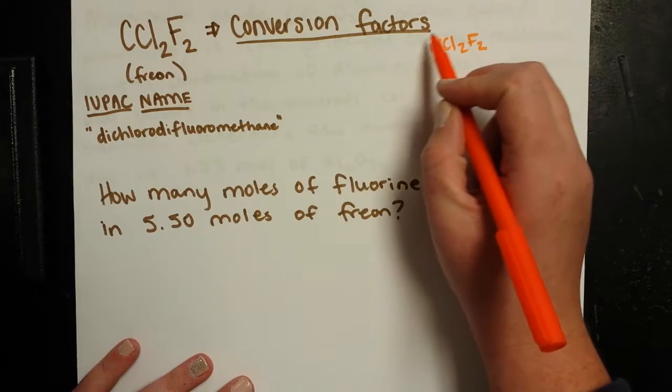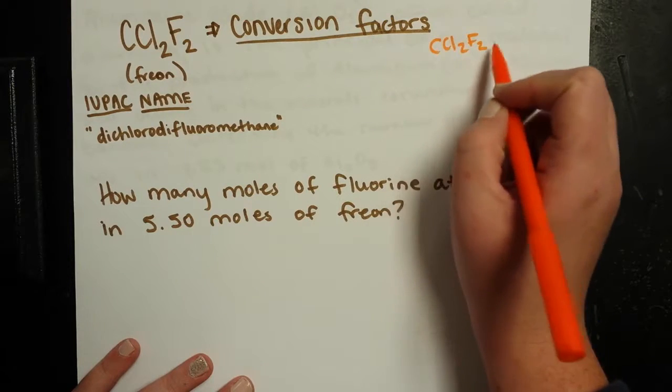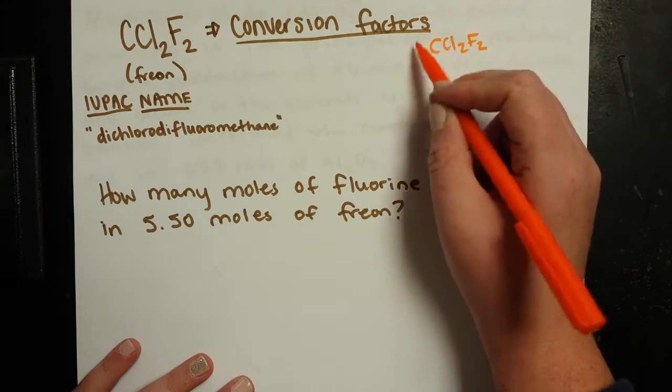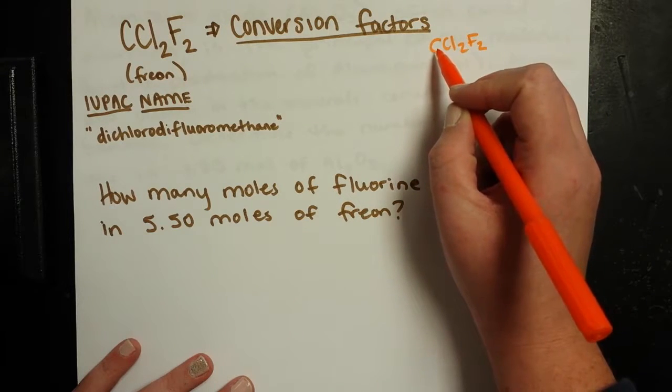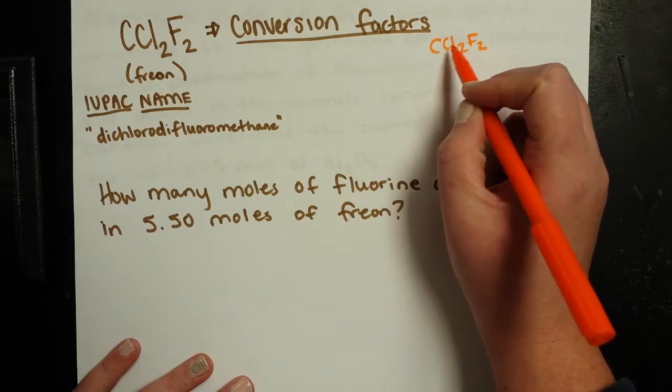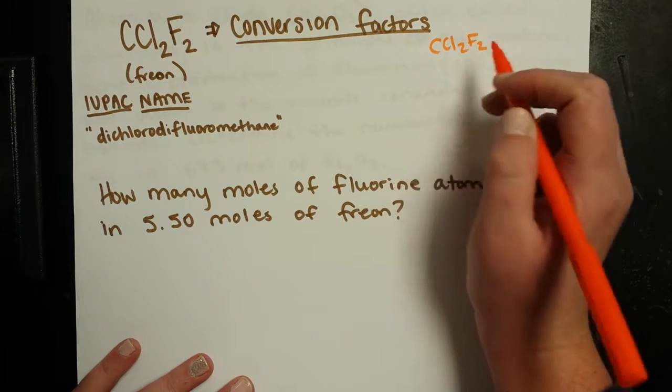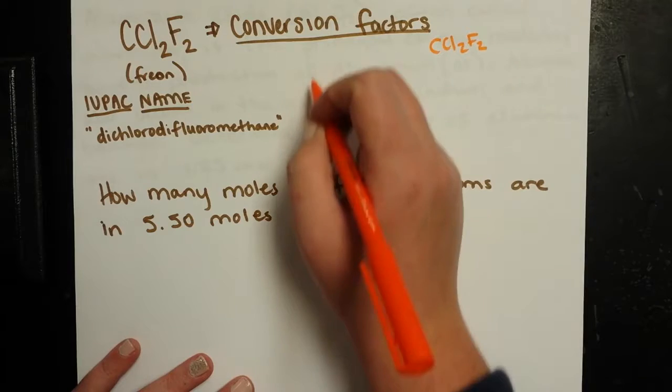So now, instead of just looking at one particle, we can look at one mole and say that one mole of this big molecule Freon, not really super big, but it's going to have one mole of carbon, two moles of chlorine, and two moles of fluorine atoms.